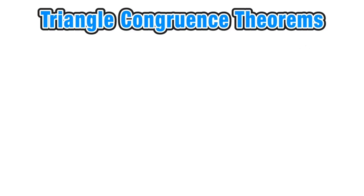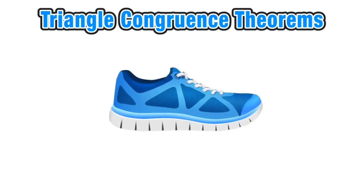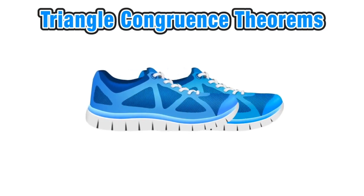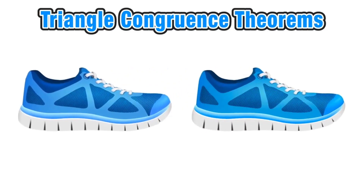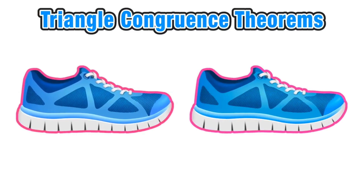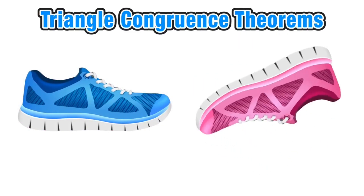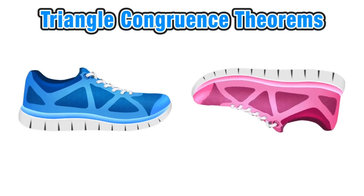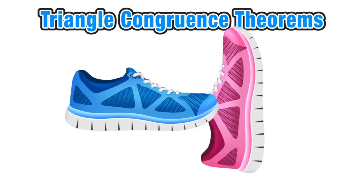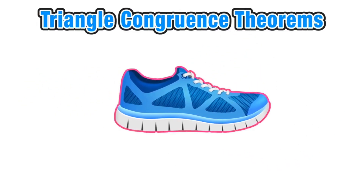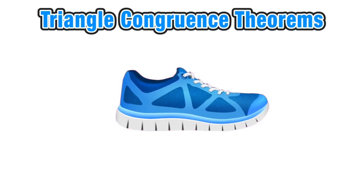Let's look at a running shoe. If I can somehow duplicate this running shoe and make an exact replica, I would say that these two shoes are congruent because they are exactly the same size and shape. Now, even if I change the color of one of the shoes or rotate it a certain number of degrees, it's still congruent to the original sneaker because it's the same size and shape.